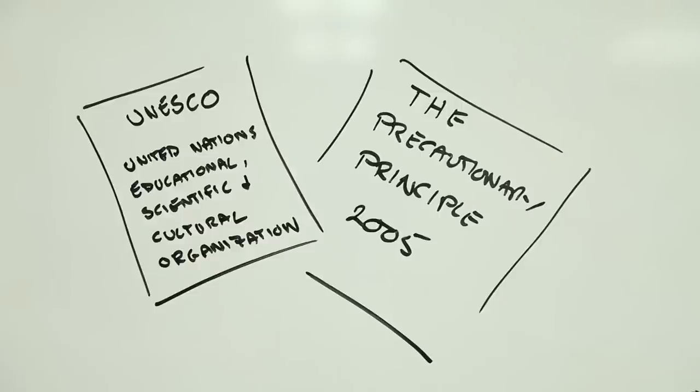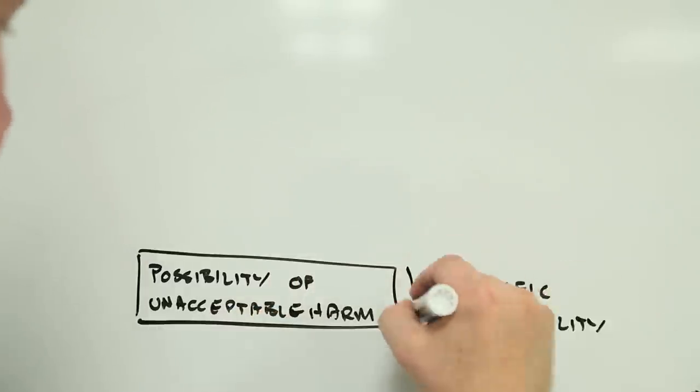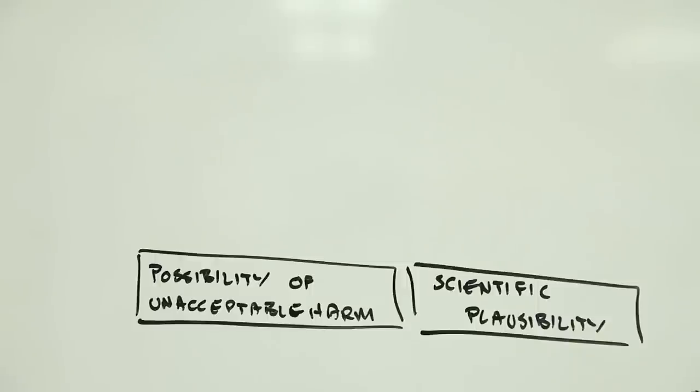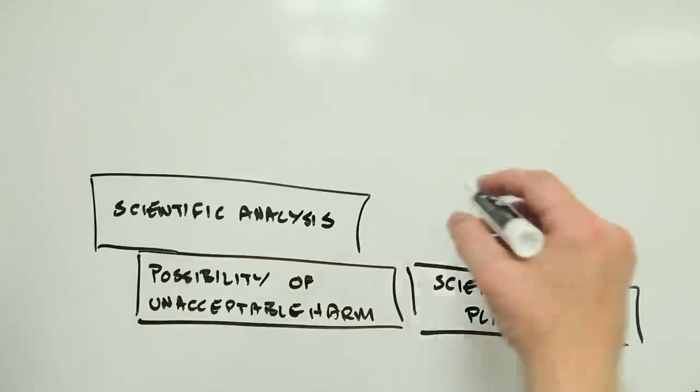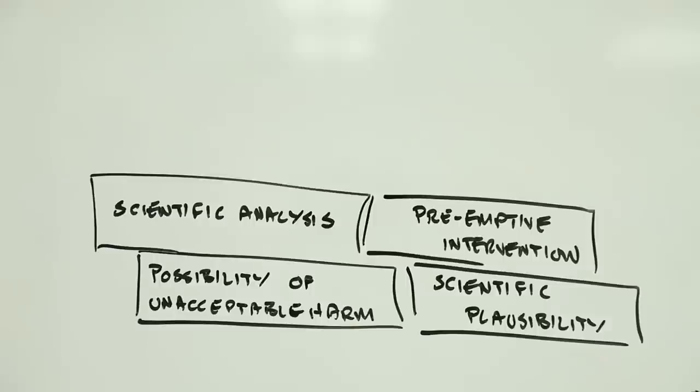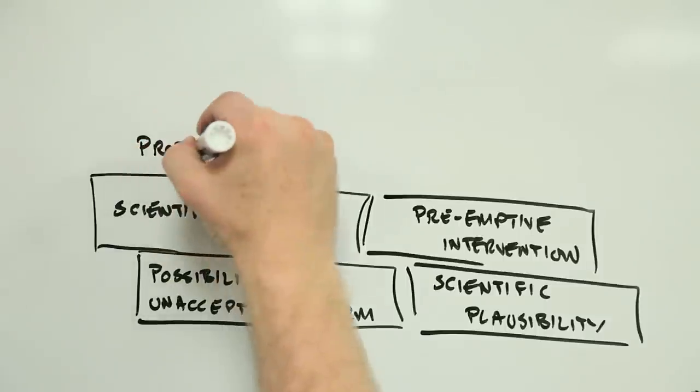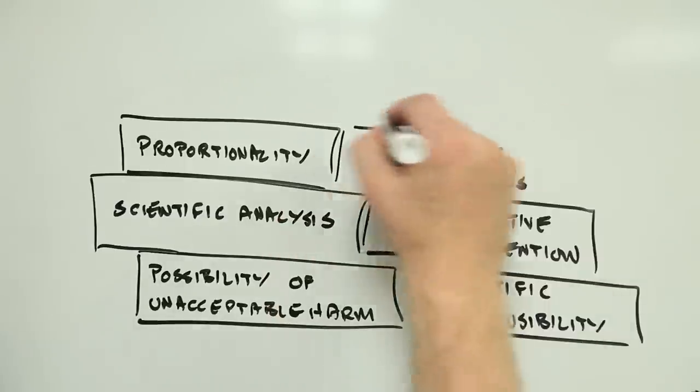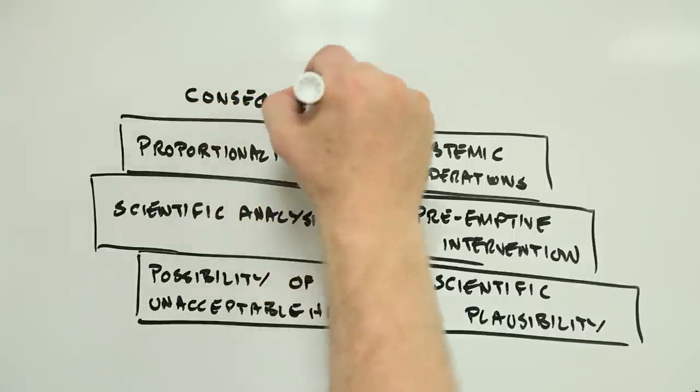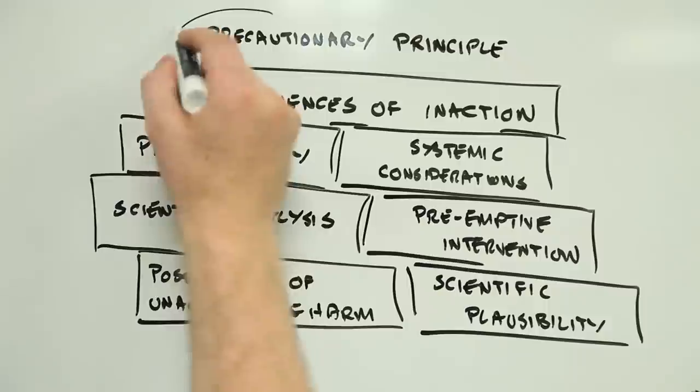Summarizing the UNESCO definition of the precautionary principle, we have this. When human activities may lead to morally unacceptable harm that is scientifically plausible but uncertain, action shall be taken to avoid or diminish that harm. The judgment of plausibility should be grounded in scientific analysis. Actions are interventions that are taken before harm occurs that seek to avoid or diminish harm. Actions should be chosen that are proportional to the seriousness of the potential harm with consideration of their positive and negative consequences, and with an assessment of the moral implications of both action and inaction.